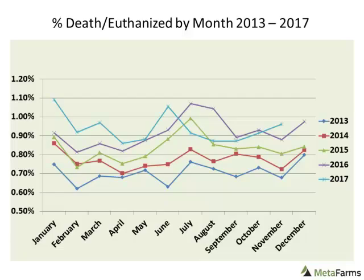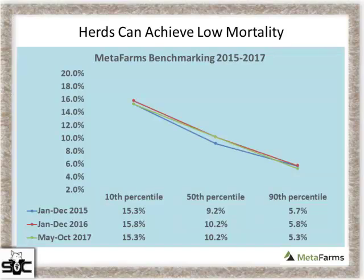This next graph, also put together by MetaFarms, looks at each month broken down by year for sow death loss. The big takeaway is 2013 is at the bottom, and 2016 and 2017 are right at the top — we do see an increase all through the months. Looking at the top 10 percentile farms, they stay pretty consistent between 5.3 and 5.8 percent, which shows we can strive to be that 5% farm.